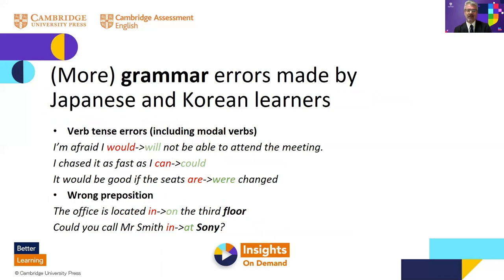There are also many errors based on verb tenses. English has many more verb tenses than Japanese or Korean. In some cases it may be a simple modal issue: 'I'm afraid I would/will not be able to attend the meeting.' We also find errors where the present tense is used instead of the past tense, or where the present auxiliary 'is' is used instead of 'was' for past continuous tenses. Perfect tenses and passives also cause many problems — 'the seats are/were changed' — as do causative constructions.